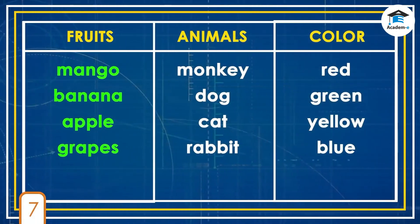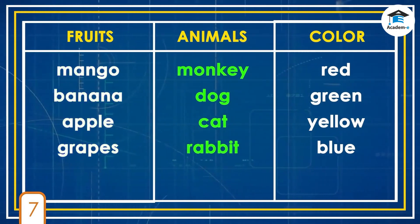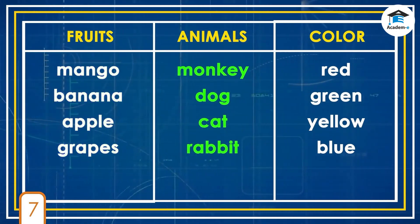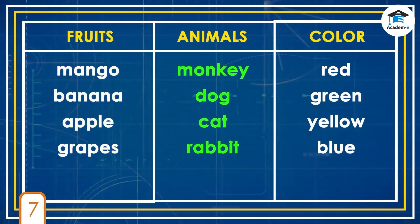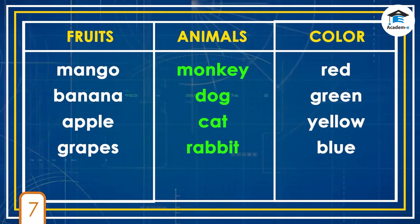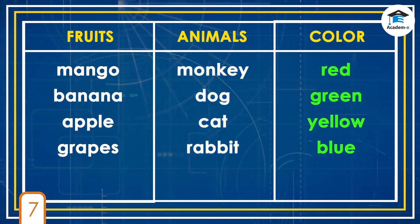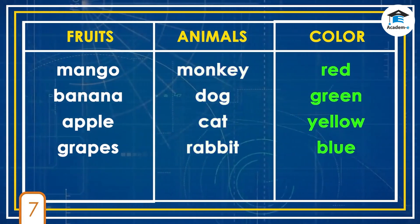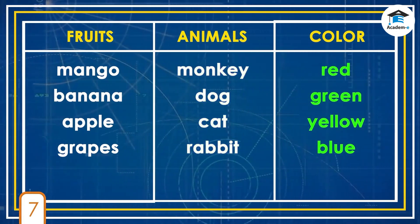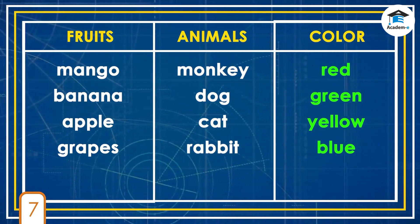Mango, banana, apple, and grapes are classified under fruits. Monkey, dog, cat, and rabbit are types of animals. While red, green, yellow, and blue are different kinds of colors.